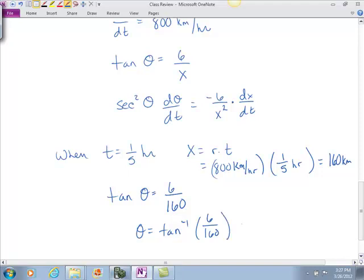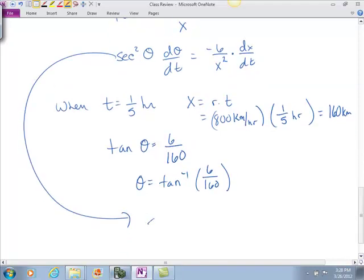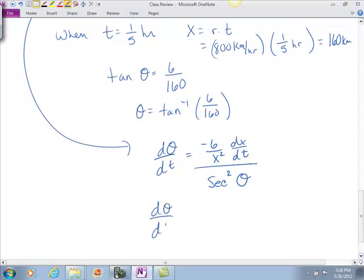So coming in through for this formula, you're going to have secant. I can solve that for dθ/dt. It will be equal to negative 6 over x squared times dx/dt, divided by secant squared theta. And so now we can plug in all our different parts. So dθ/dt is equal to negative 6, what do we find x to be? 160 squared times dx/dt, which is the 800 kilometers per hour.